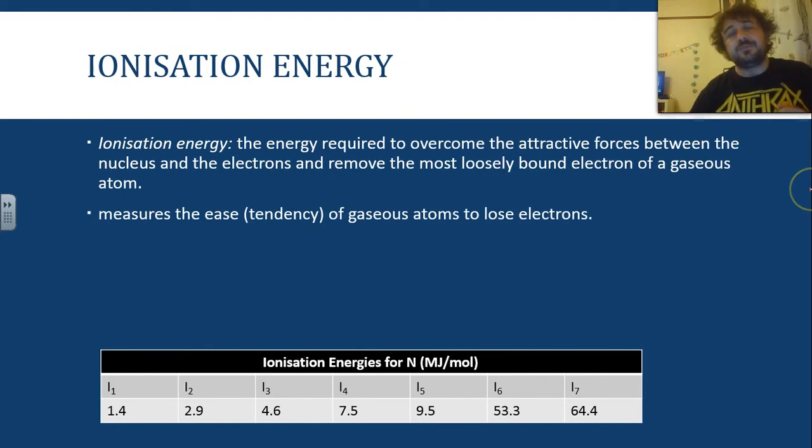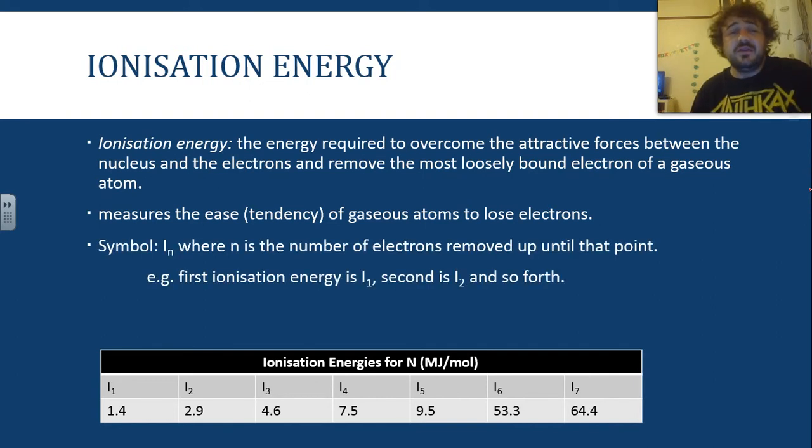Ionization energy measures the ease, or the tendency, of a gaseous atom to lose those electrons. And the symbol is IN. Now, for a quick example of that, it's I1, I2, okay, N is the number of electrons moved up to that point.